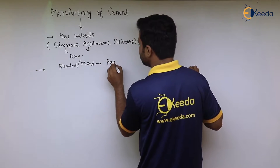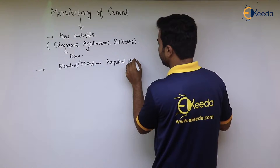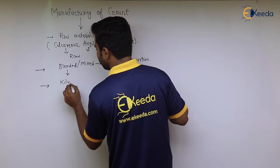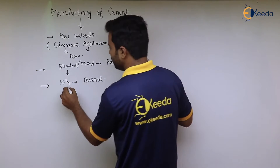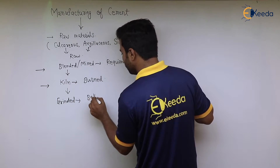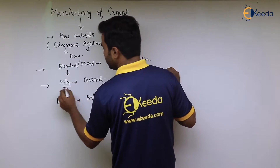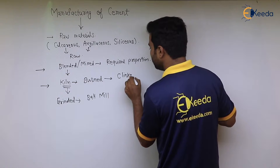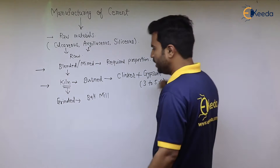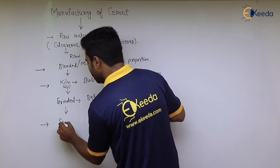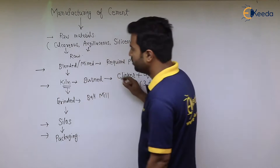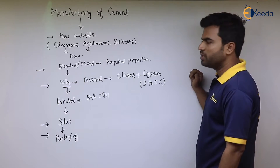After the mixing, they are burned in the kiln and then ground in a ball mill. After burning they are burned till clinkers are formed. After clinkers are formed, gypsum is added, which is generally 3 to 5%. After the grinding process they are taken into silos and then taken for packaging.